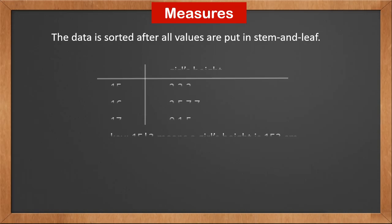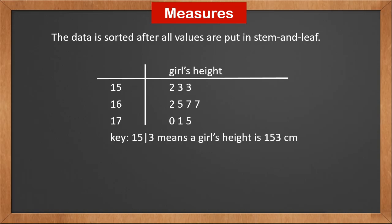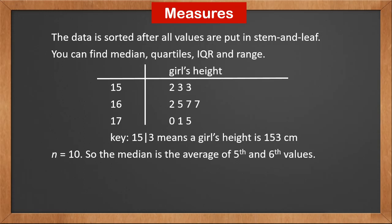Since the data is sorted after all values are placed in the stem and leaf diagram, you can find the median, quartiles, IQR, and range. The total number is 10, so the median is the average of the fifth and sixth values. Counting from the top, we find those two middle values.